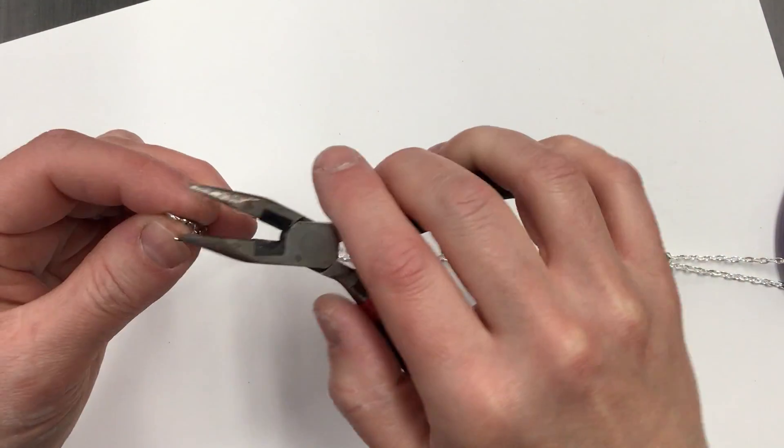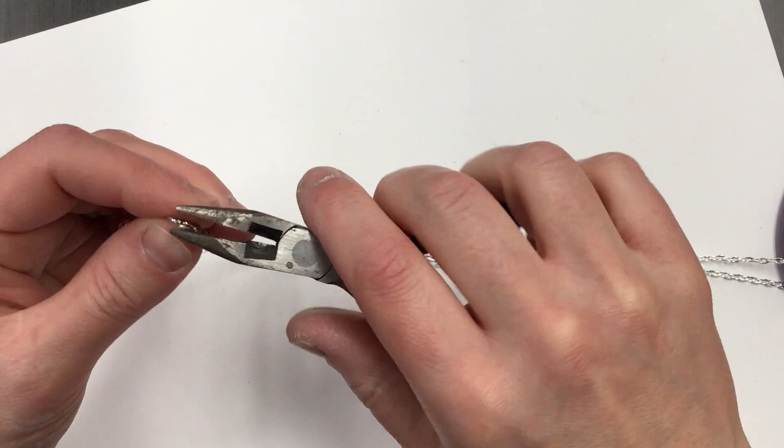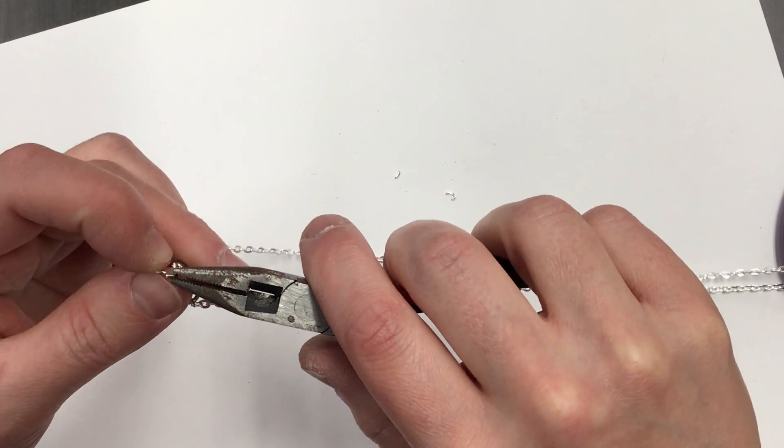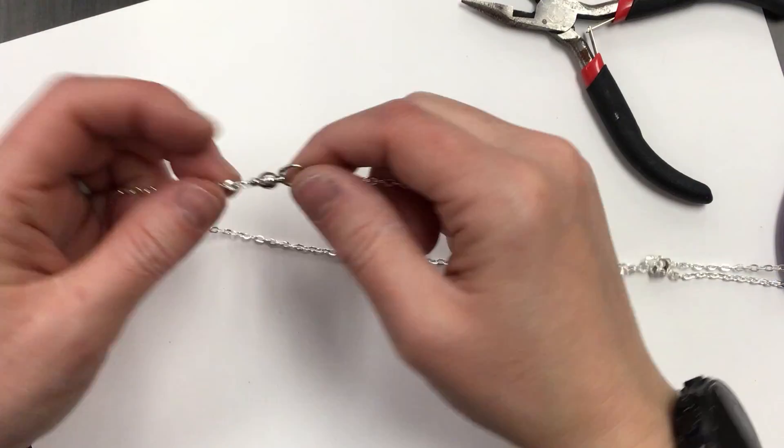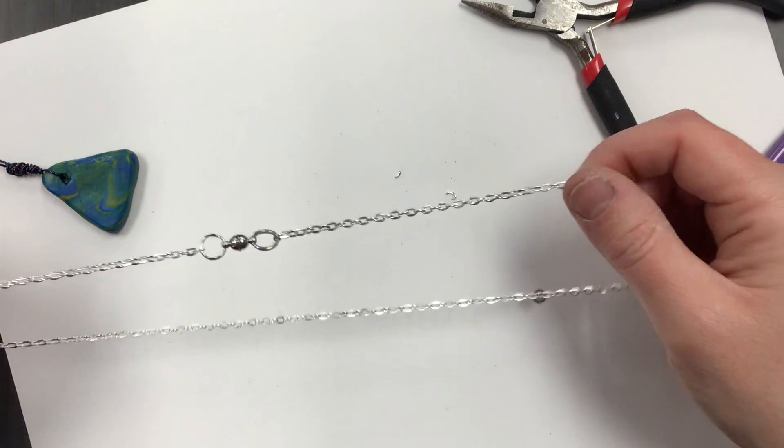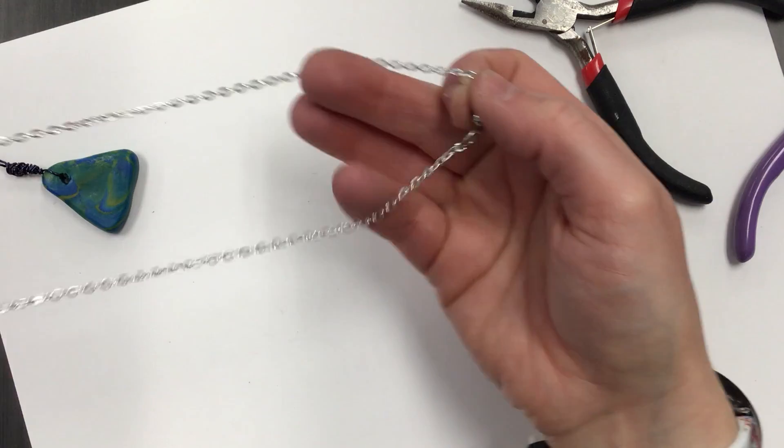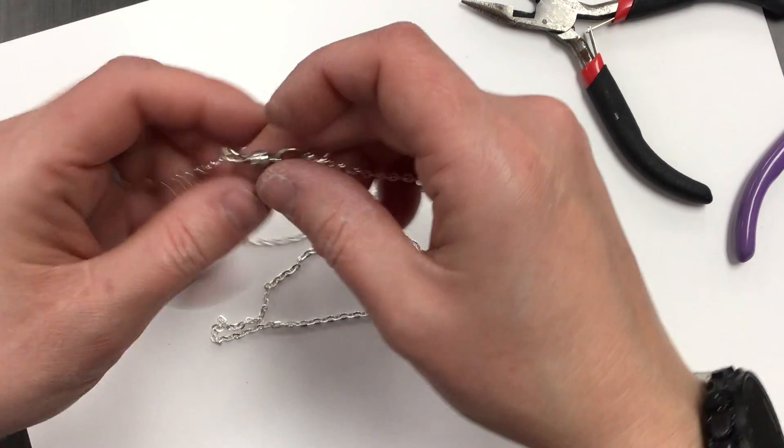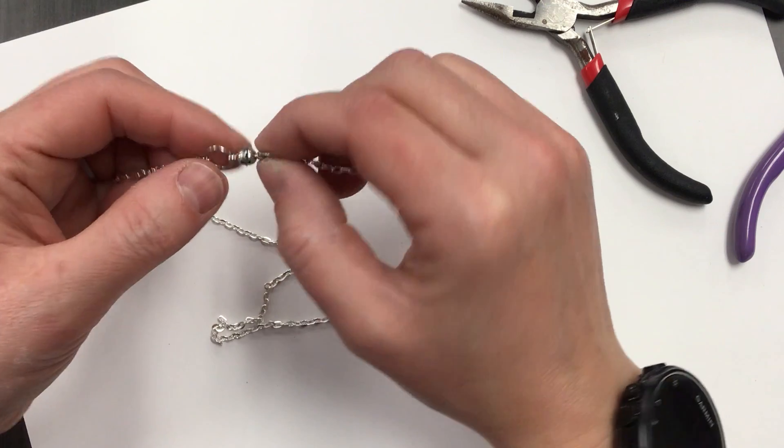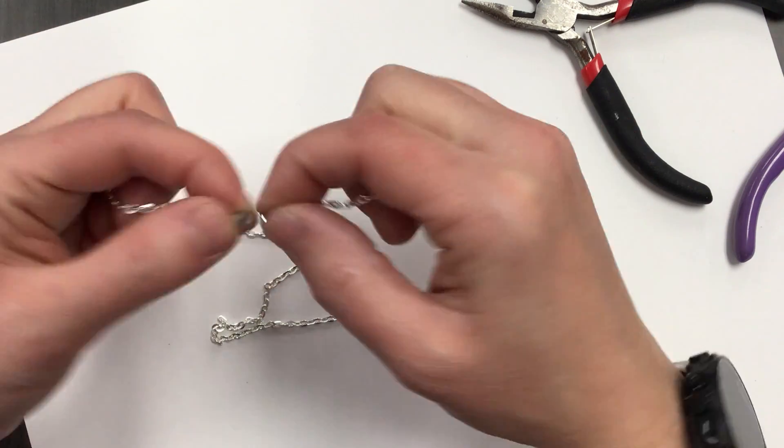And then I'm going to pinch it shut, nice and tight. Mine doesn't want to go right away, so there we go. Now, what I have right now is a chain for my necklace that has a jump ring that helps hold the fastener in place so that I can close this.